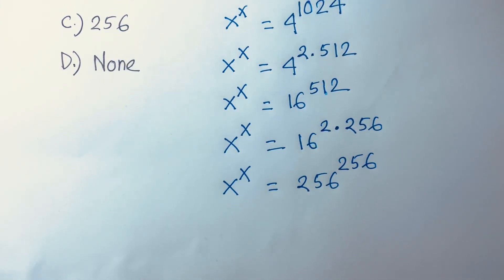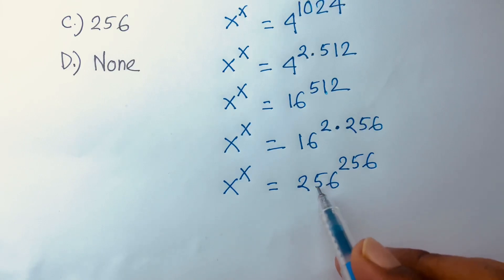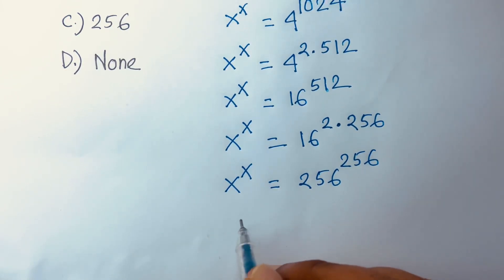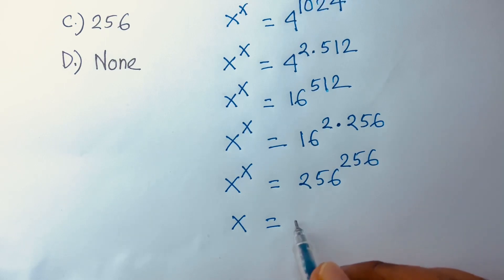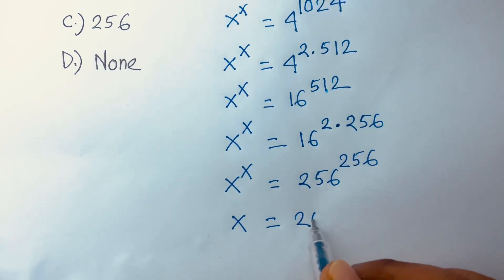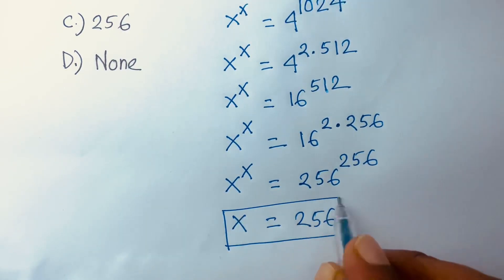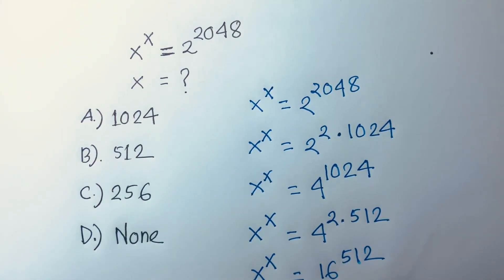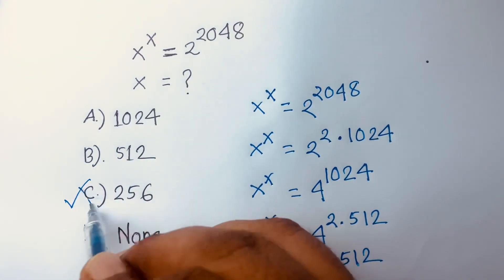Here we have x to the power x equal to 256 to the power 256, so I can see easily that x is equal to 256. This is our final answer. Option C is our right answer.